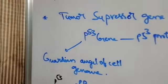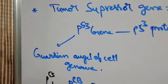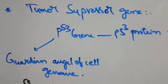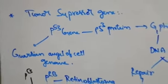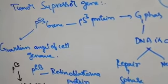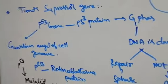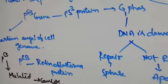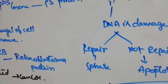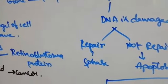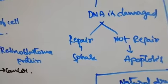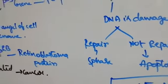P53 gene is present in every cell of the human. It produces P53 protein which acts on the G phase and checks the DNA which is undergoing division. If any change in the DNA, it repairs that DNA and sends it to S phase. If not repaired, it sends it to apoptosis.